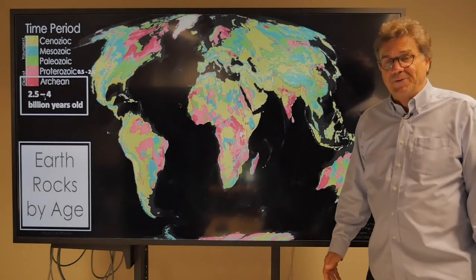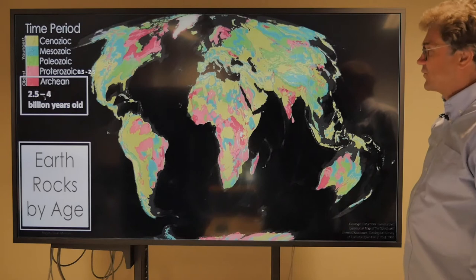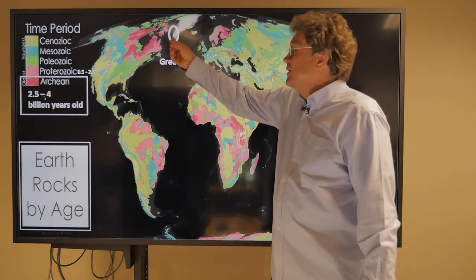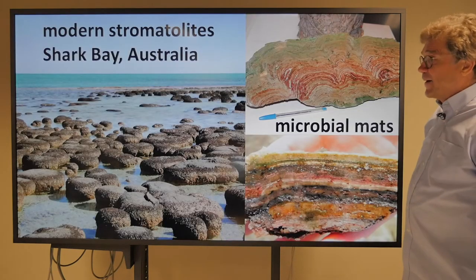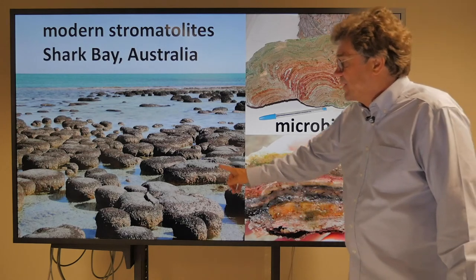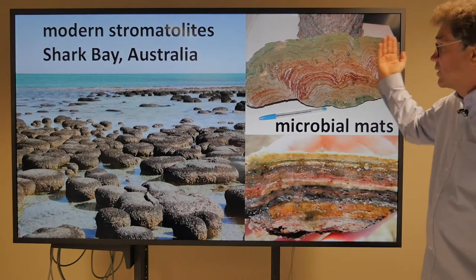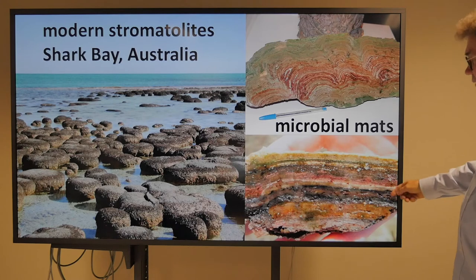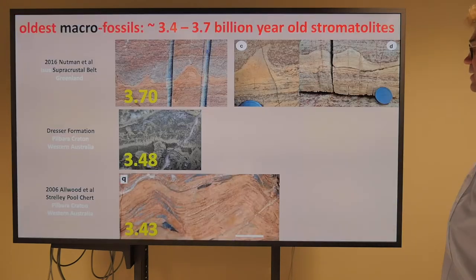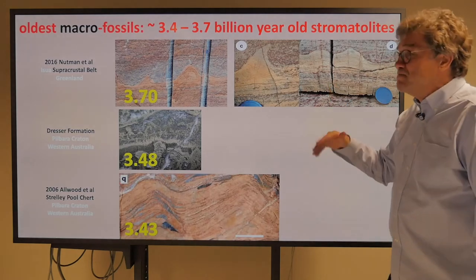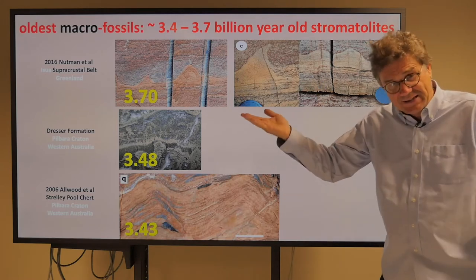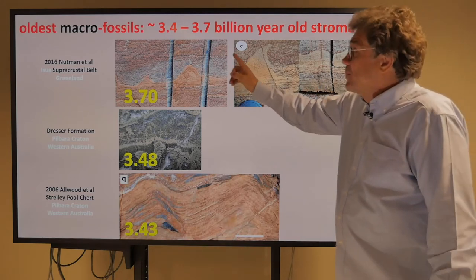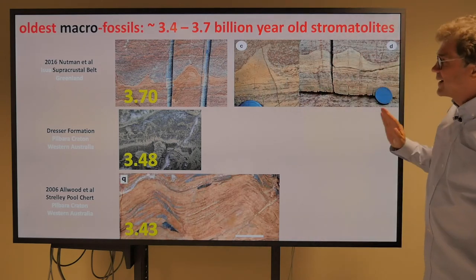What about the oldest rocks on Earth? The oldest rocks are from Isua, Greenland, and from the Pilbara in Australia. There are modern stromatolites in Shark Bay — if you do a cross section, they're microbial mats, with the green part at the top where the sun reaches. The oldest macro fossils — things you can see, things the size of your hand — are between 3.4 and 3.7 billion years old stromatolites.